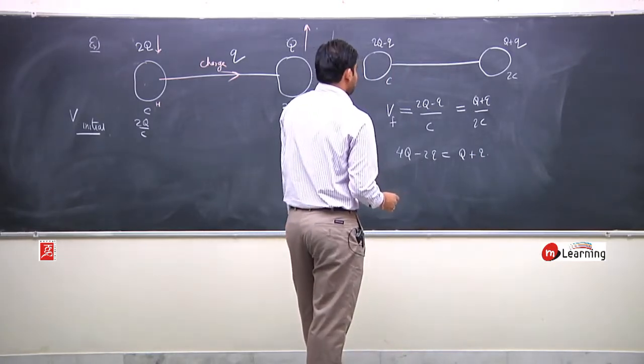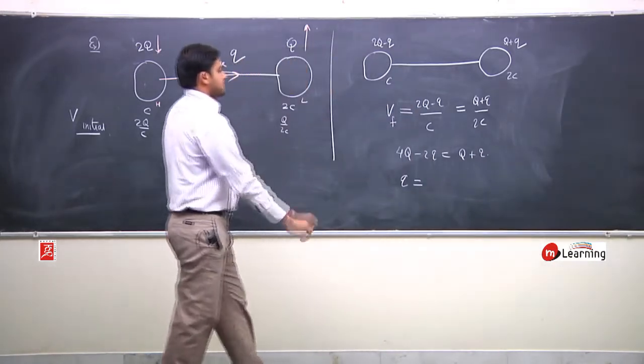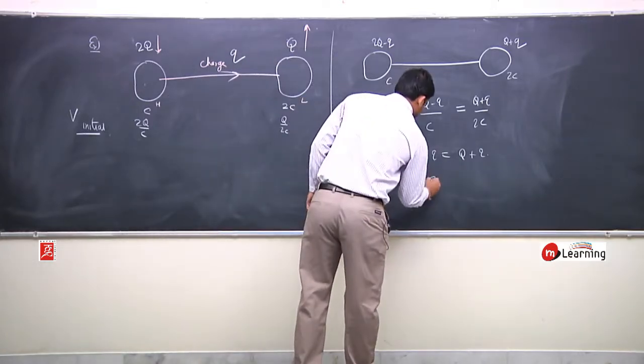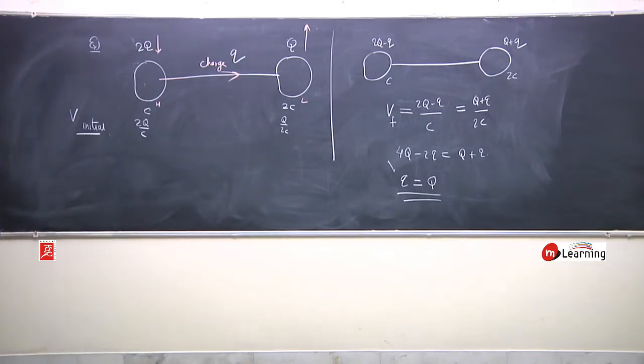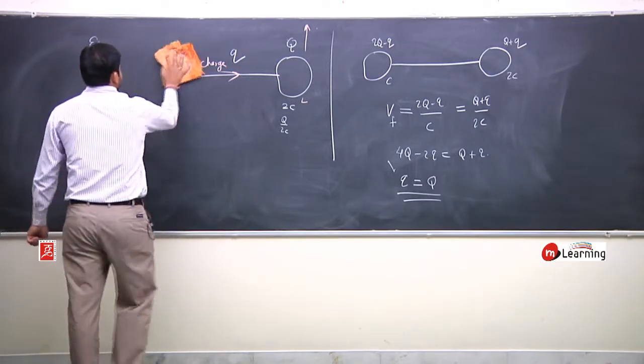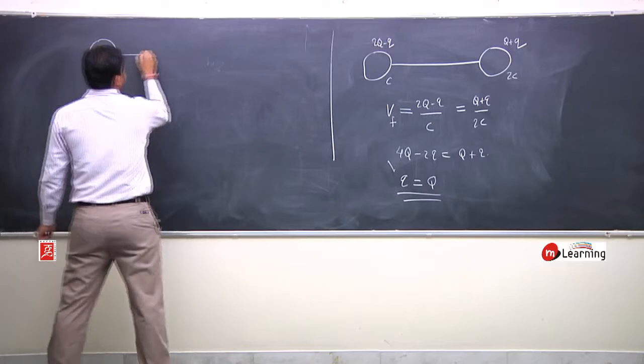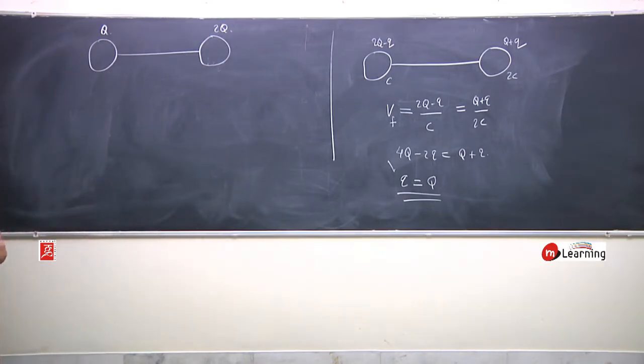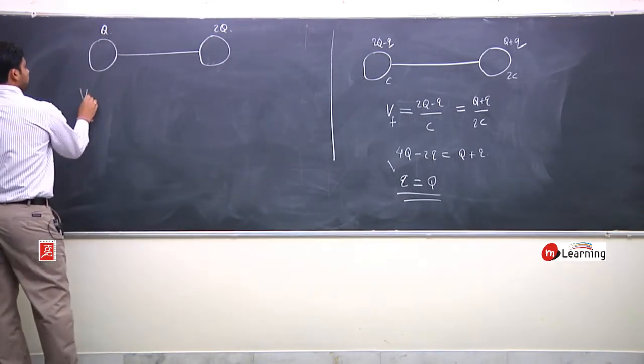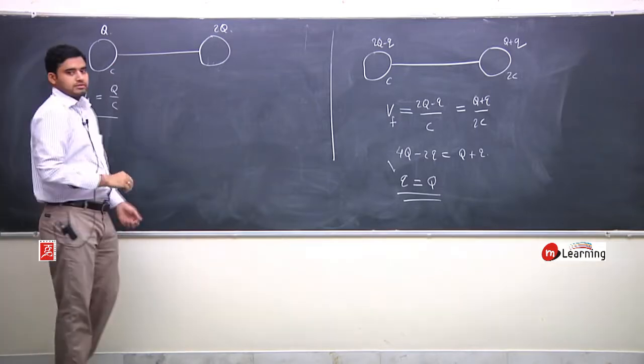Q plus Q by C equals Q minus Q by 2C. So finally, charge kitna hojaega - Q plus Q means 2Q idhar aur idhar Q. Right, final charge nikaal liya, final potential dono ka, isi ek ka nikaal lo - Q by C that is final potential.